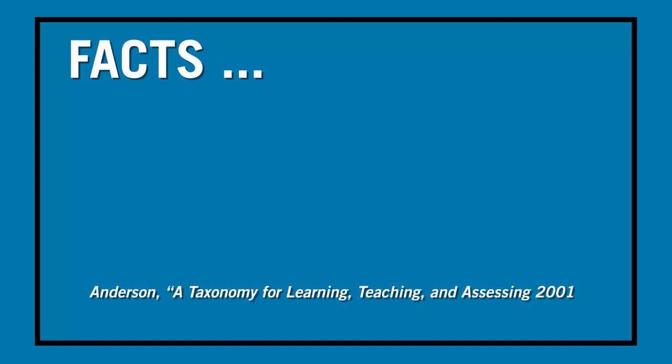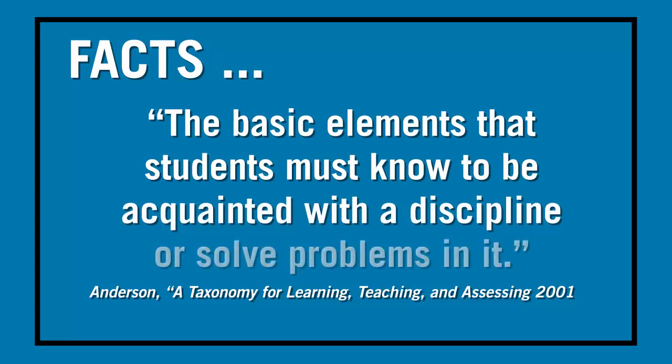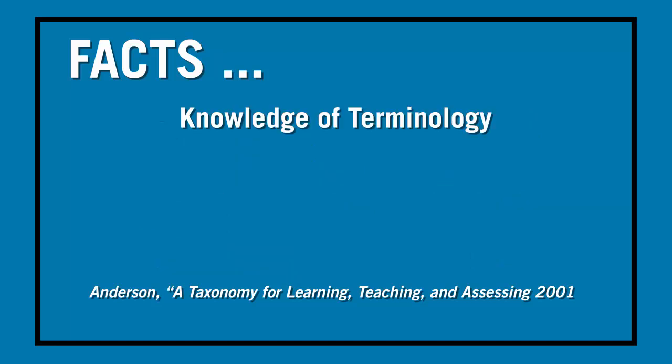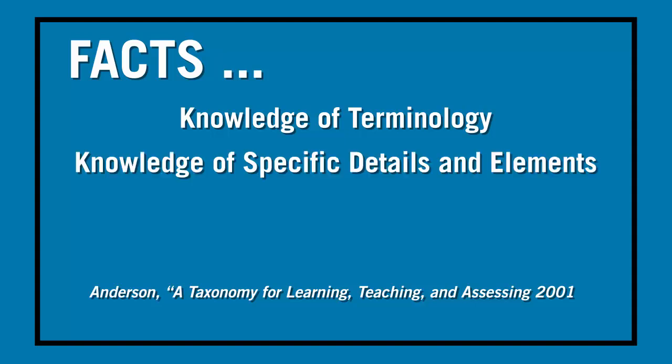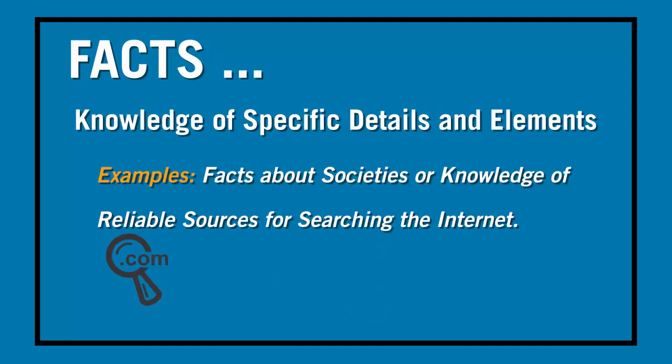Anderson and others suggest that facts are the basic elements that students must know to be acquainted with their discipline or solve problems in it. They suggest there are two types of sub-knowledge related to facts: knowledge of terminology and knowledge of specific details and elements. Some examples of knowledge of terminology may include knowledge of the alphabet or important computer terms. Examples of specific detail and elements knowledge may include facts about societies or knowledge of reliable sources for searching the Internet.